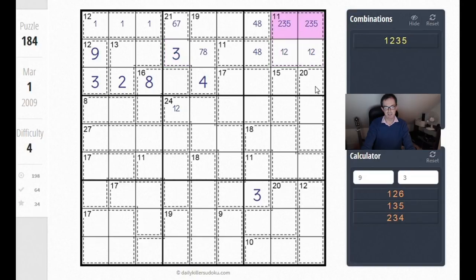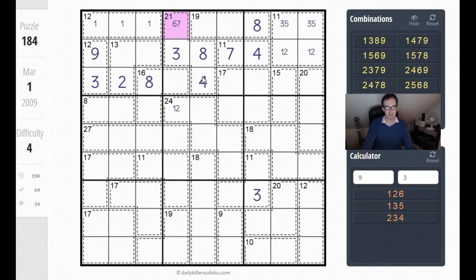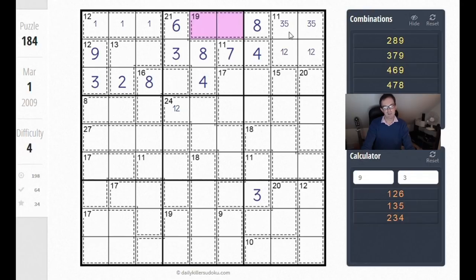Now this can no longer be an 8 because that would give us a 3 here. So we can remove the 8. This becomes a 7. That gives us an 8 there. It gives us a 6 here. Now the 19 cage is forced at last. And from here, the solve becomes possible. I'm not going to say it's easy, but it's possible. So this is the way to start a monstrously hard puzzle.